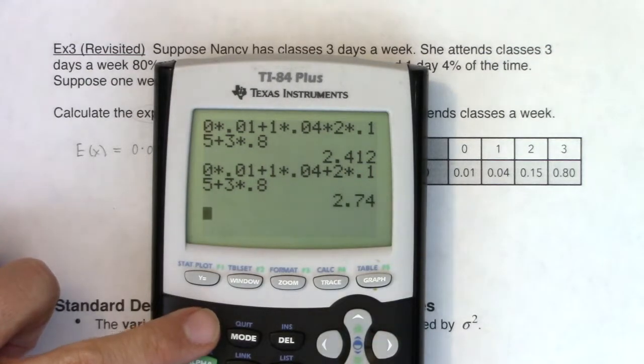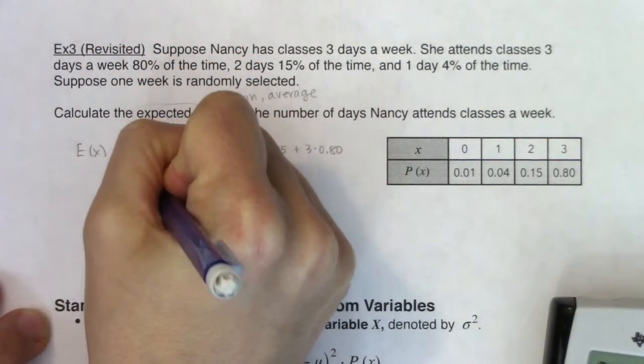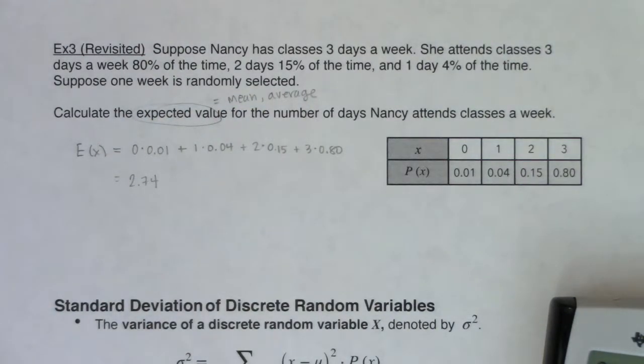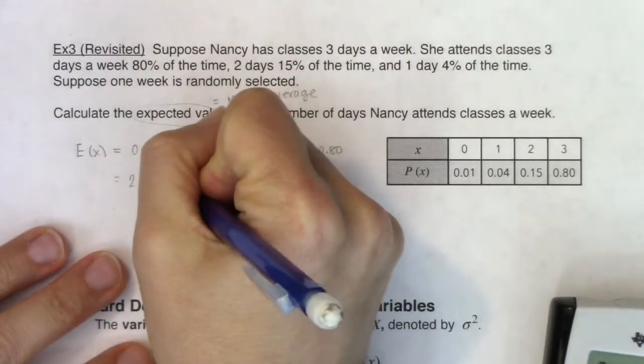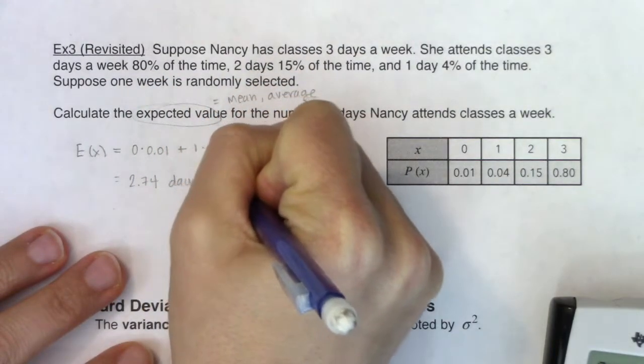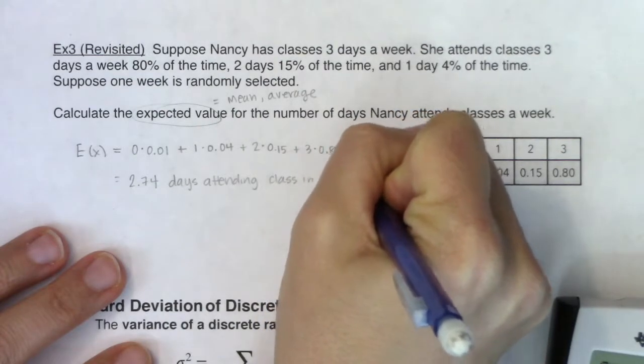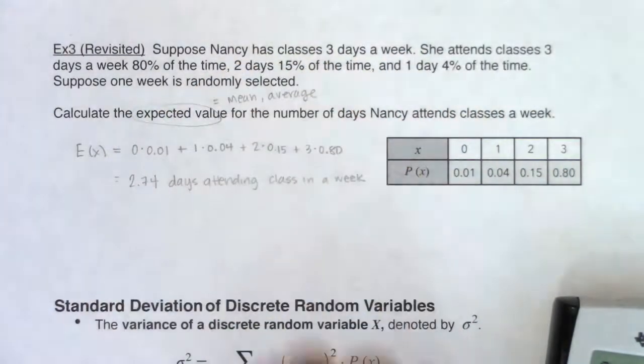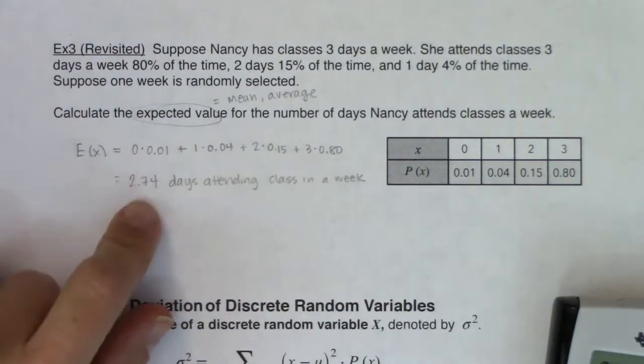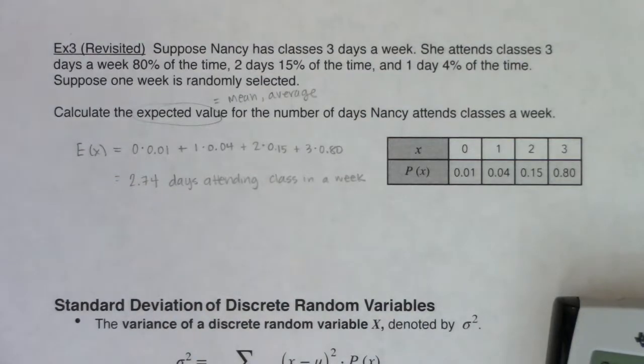There's the number that I should be getting. I should be getting an expected value of 2.74. We need to think about the units - this was she went to class on average 2.74 days per week. Nancy usually gets to class three days a week, but there's some times when she goes 0, 1, or 2, which is why it dragged her average down a little bit. She could either go 0, 1, 2, or 3 - there's no way to go 2.74 days, but that's still the numerical average.